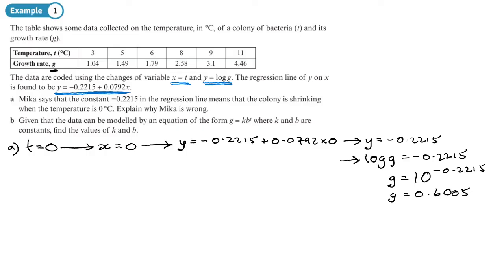Now that growth rate is positive. It's a positive number so it's not shrinking, it's growing. So she's wrong because this is positive. And if g is positive, it means that there's growth here, not shrinkage.